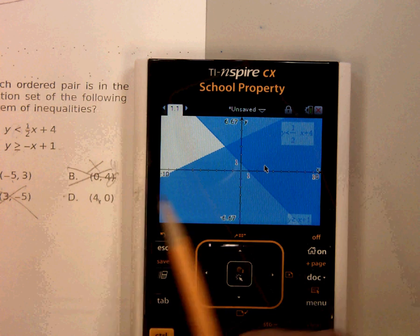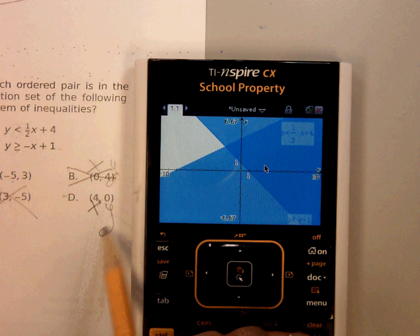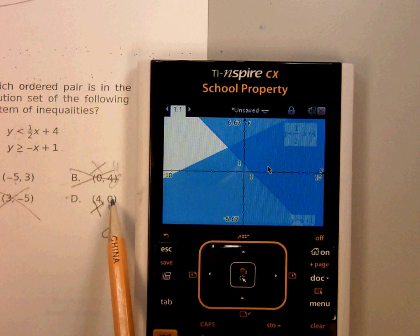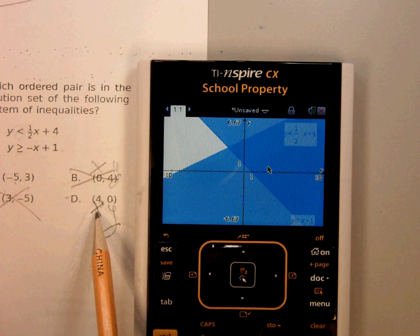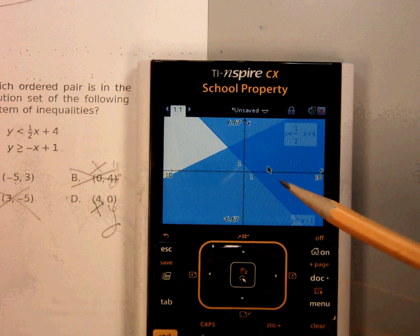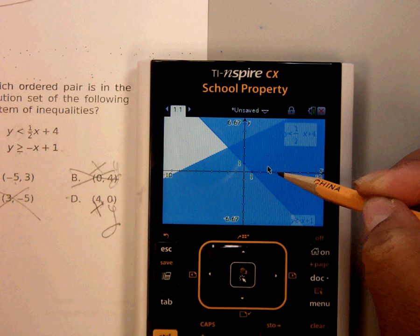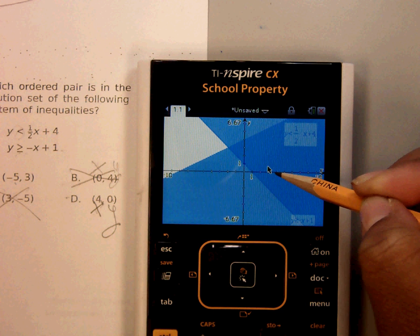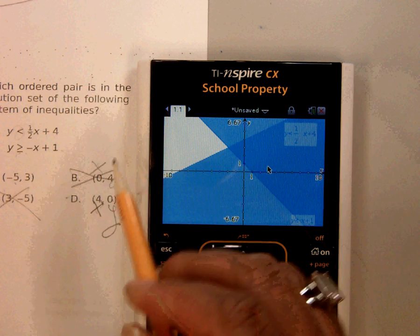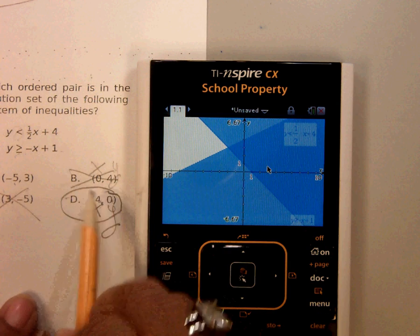That leaves one answer, but let's check. And for those that get lost on that, the y is zero. So that means we're talking about x, the four on the x. So, one, two, three, four. Boom, ba-da-bing, ba-da-boom. There it is. There it is to be exact. Yes. And it's in the shaded region. The answer is D.